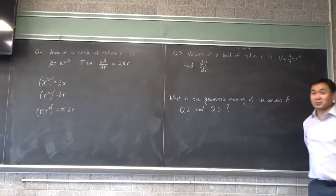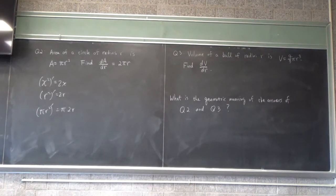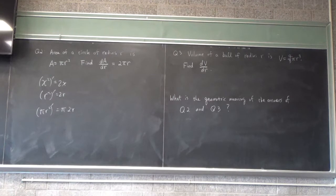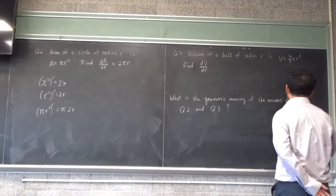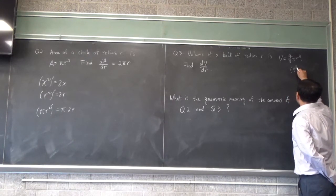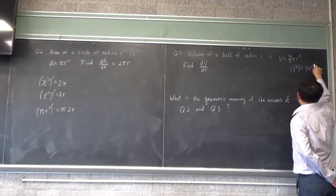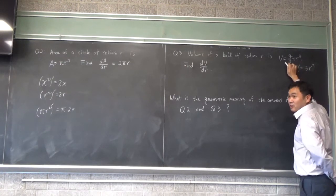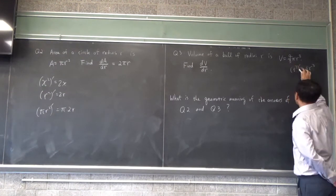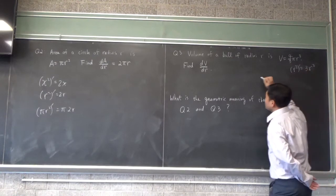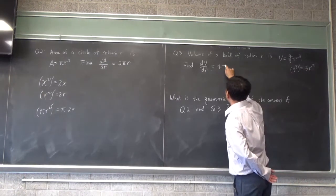Okay, what about this one? What's the answer to this? Yes? It's 4/3π × 3r². Okay, that's correct. But can't you simplify it? Yeah, what do you get? 4πr². That's exactly right. So if you differentiate r³, you get 3r². But because there's a 3 in the denominator, when you cancel this 3 with this 3, you end up with 4πr².